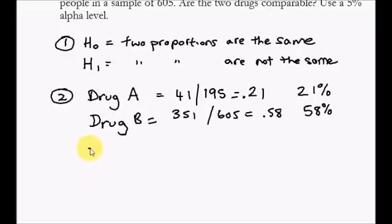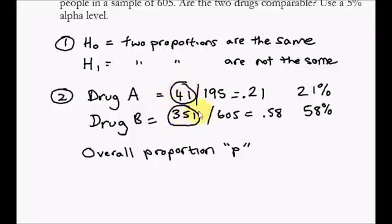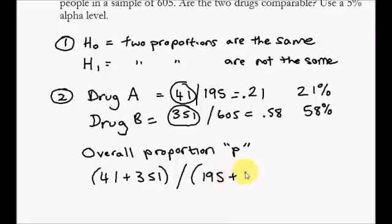And we also need to know the overall proportion. I'm going to call that P. You can think of the overall proportion as the total number of successes out of the total number of items. I'm going to add 41 and 351, our successes, and divide by 195 and 605. And if I do that on the calculator, I get 0.49, that's 49%.